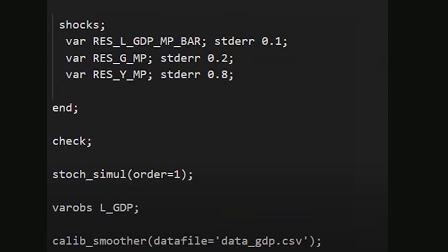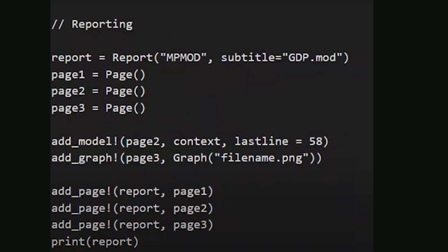Next, we create a PDF report to include model equations, parameters, standard deviations, and output figures. Using the report command, we specify the title and optional subtitle. Pages are added with the page command. Model details are included with add_model and graphs with add_graph. Additional pages are added with add_page. The print_report command generates the final PDF.